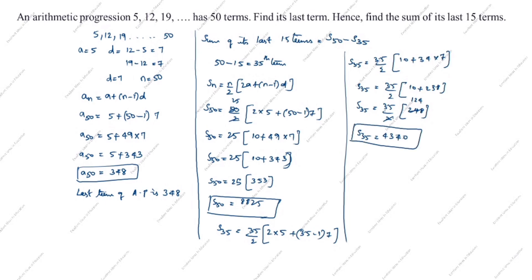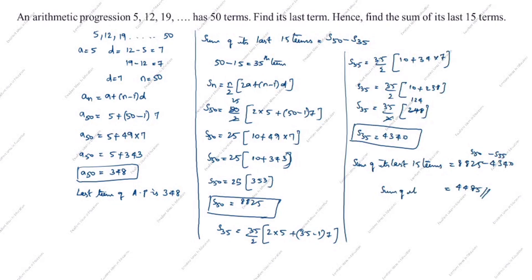What is the formula? S₅₀ minus S₃₅. Sum of its last 15 terms is equal to 8825 minus 4340, which equals 4485. Sum of its last 15 terms is 4485. This is the answer.